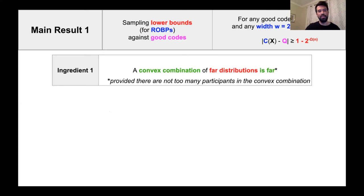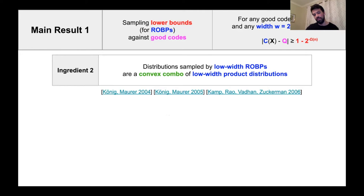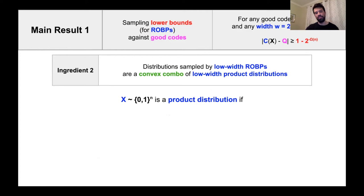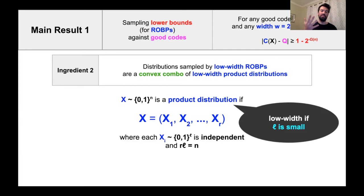Ingredient two says that distributions sampled by low-width ROBPs are a convex combination of so-called low-width product distributions. This result was proven in alternative language by Koenig and Mohr and Kamp, Raub, Adan, and Zuckerberg. A random variable X samples a product distribution if it can be written as a concatenation of R independent chunks, each an independent random variable over L bits, with R times L equals N. We say the product distribution has low width if the number of bits in each chunk, L, is small.